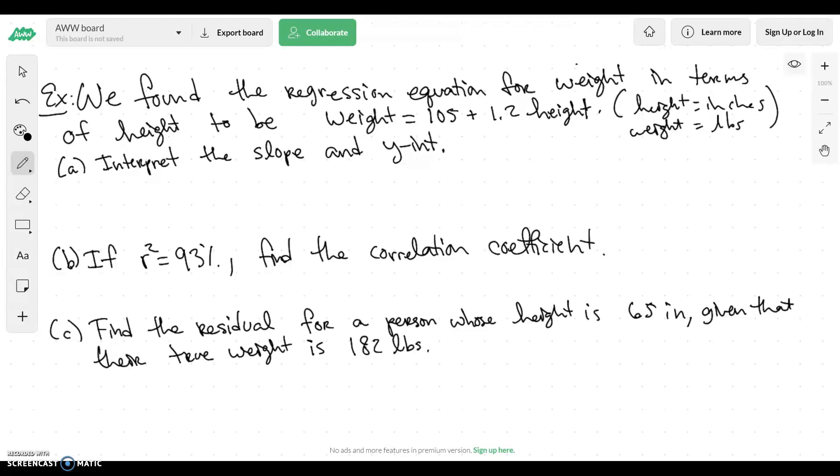Alright, so let's say we found the regression equation for weight in terms of height to be weight equals 105 plus 1.2 times the height. Here, the height is measured in inches and our weight is measured in pounds.